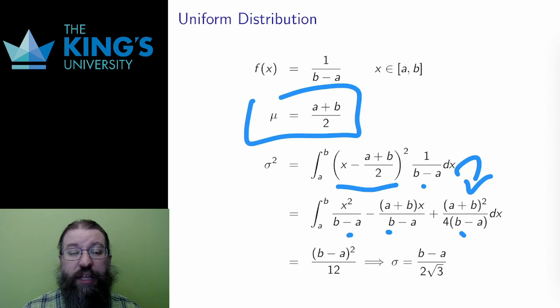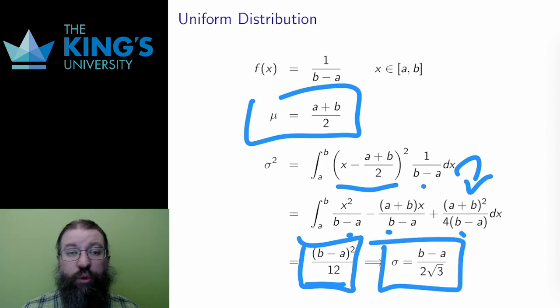And again, I've not shown all of the steps of integration. This will split up into three integrals, and each integral is just a power rule integral. After a bunch of simplification, the value of sigma squared works out to b minus a squared over 12, and the sigma is the square root of this, b minus a over 2 root 3.